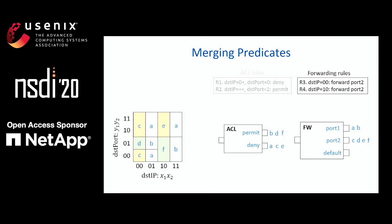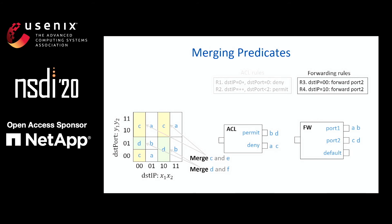The key message here is we only need to create a new predicate when the forwarding behavior of some packets has changed. Suppose we add another two forwarding rules, after which we create some new predicates. Here we can see that two predicates C and E appear at the same ports of all elements, meaning they have the same forwarding behavior. So we can merge them into a single predicate by computing a logical disjunction of them. Similarly, we can merge predicates D and F. After the merge, we only have four predicates, which are the minimal number of equivalent classes for this example.